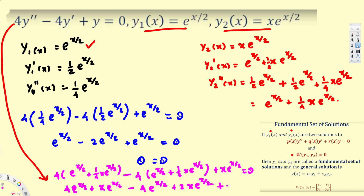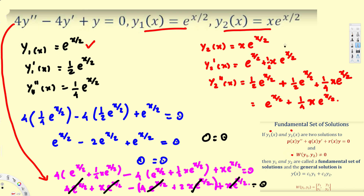Collecting terms: 4e^(x/2) minus 4e^(x/2) cancels, and x*e^(x/2) minus 2x*e^(x/2) plus x*e^(x/2) also cancels. Everything equals zero, so 0 = 0 and y2 = x*e^(x/2) is also a solution for the differential equation.